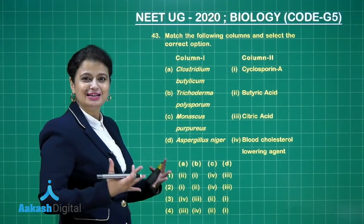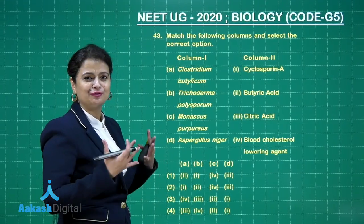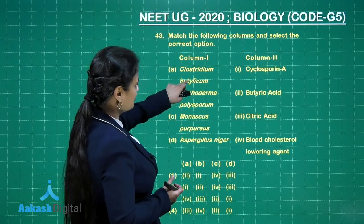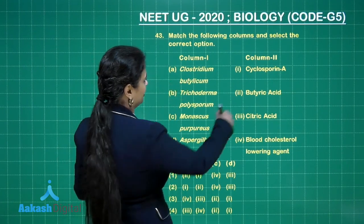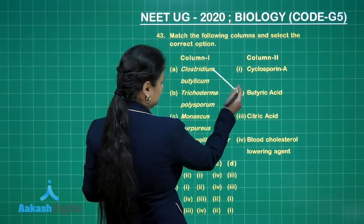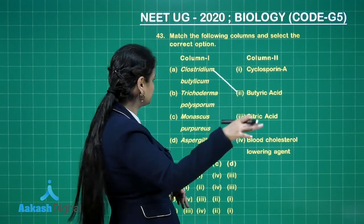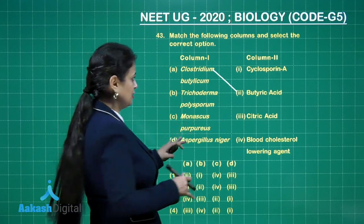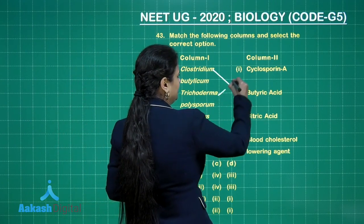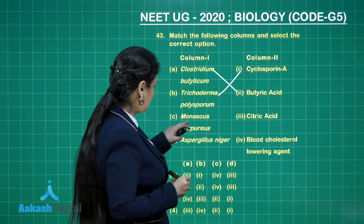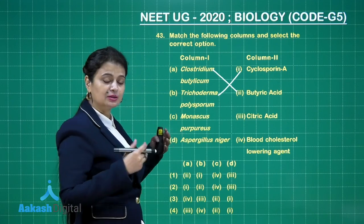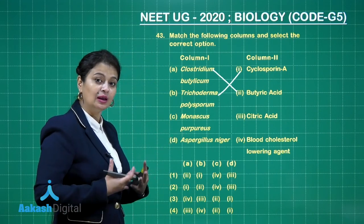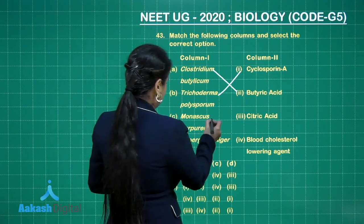Match the following — a very easy equation from Microbes in Human Welfare. Clostridium butylicum is involved in the synthesis of butyric acid through fermentation activity. Trichoderma polysporum forms cyclosporine A, which is an immunosuppressant. Monascus purpureus forms statins, and these statins are used for lowering blood cholesterol.